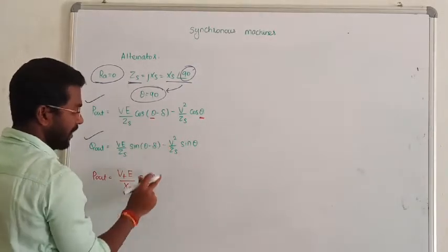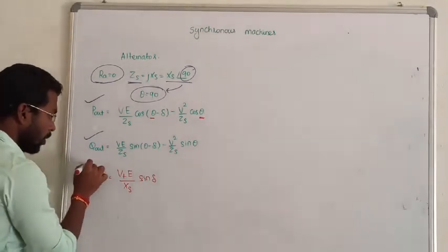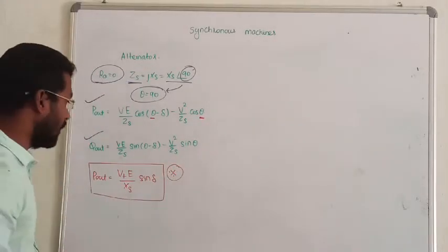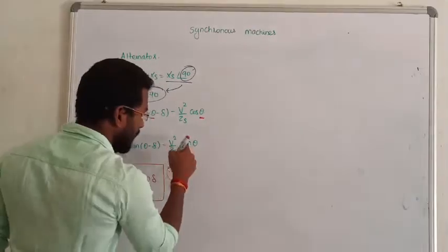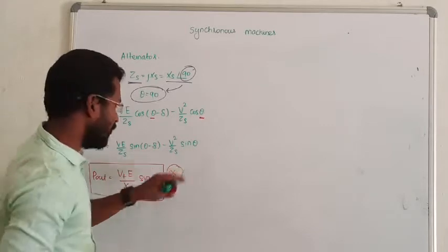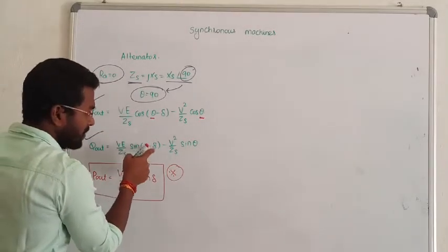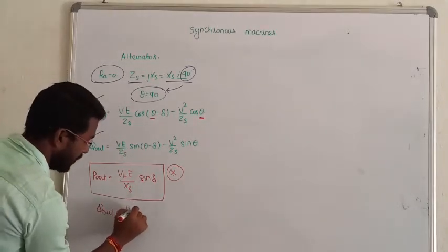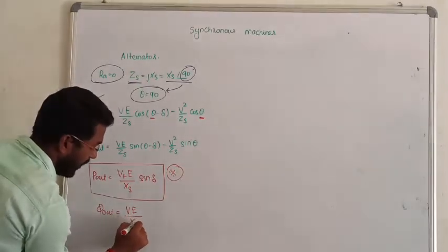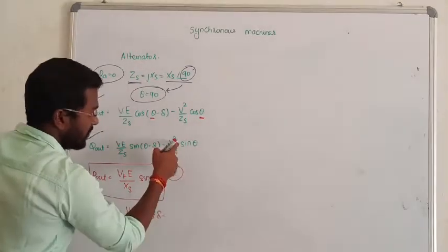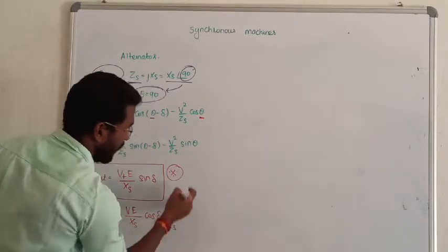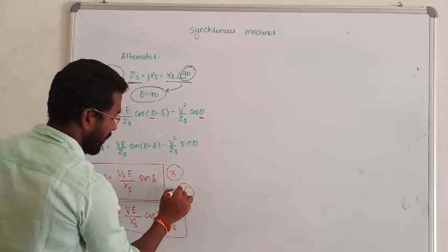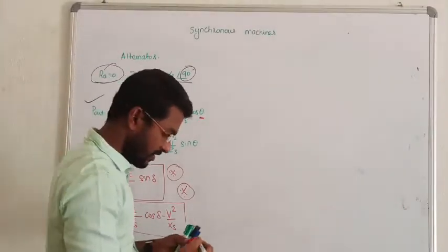This is the most generalized form of the real power output equation — that is very, very important, try to keep it in your mind. For the reactive power, when we make θ equal to 90 degrees, sin(90) is 1, and sin(90 − δ) gives cos(δ). So the output reactive power can be written as Q = (VE/Xs)·cos(δ) − V²/Xs.